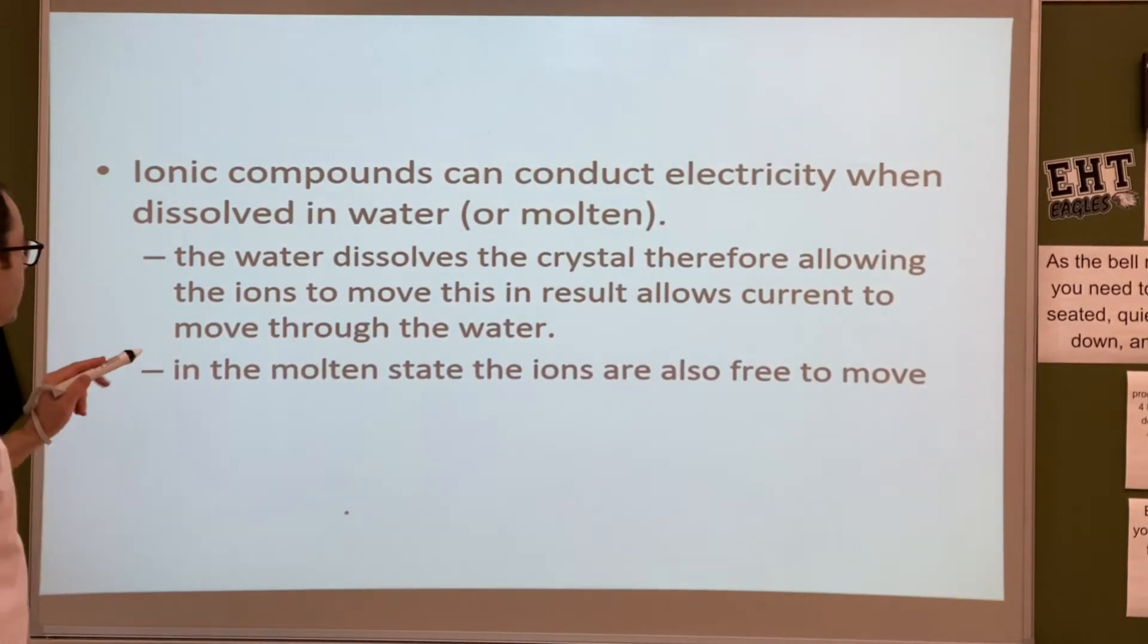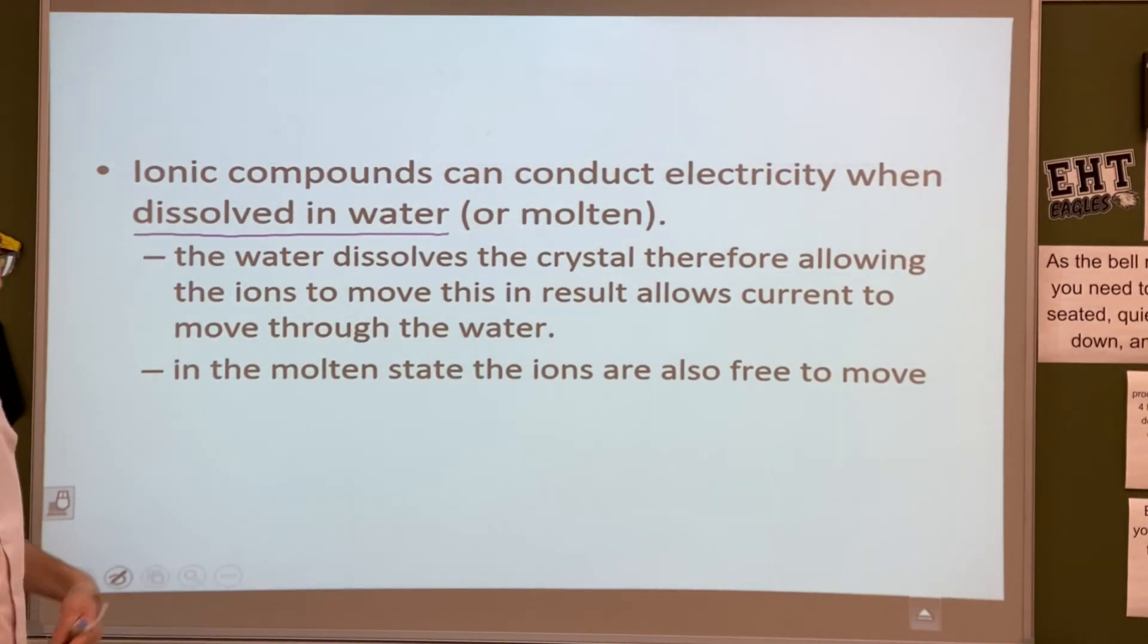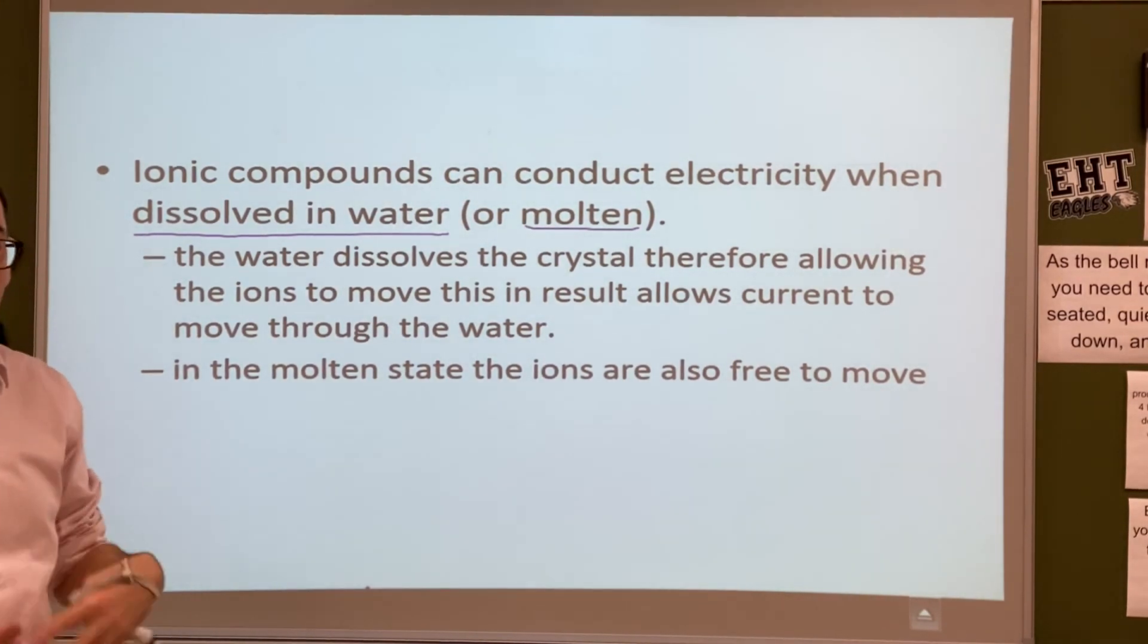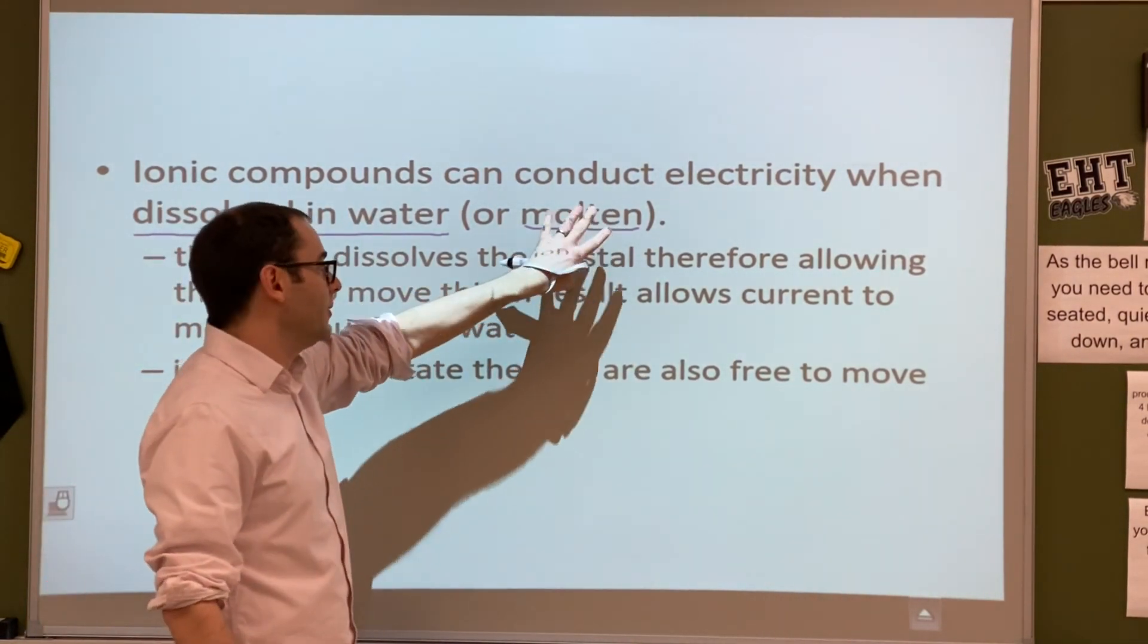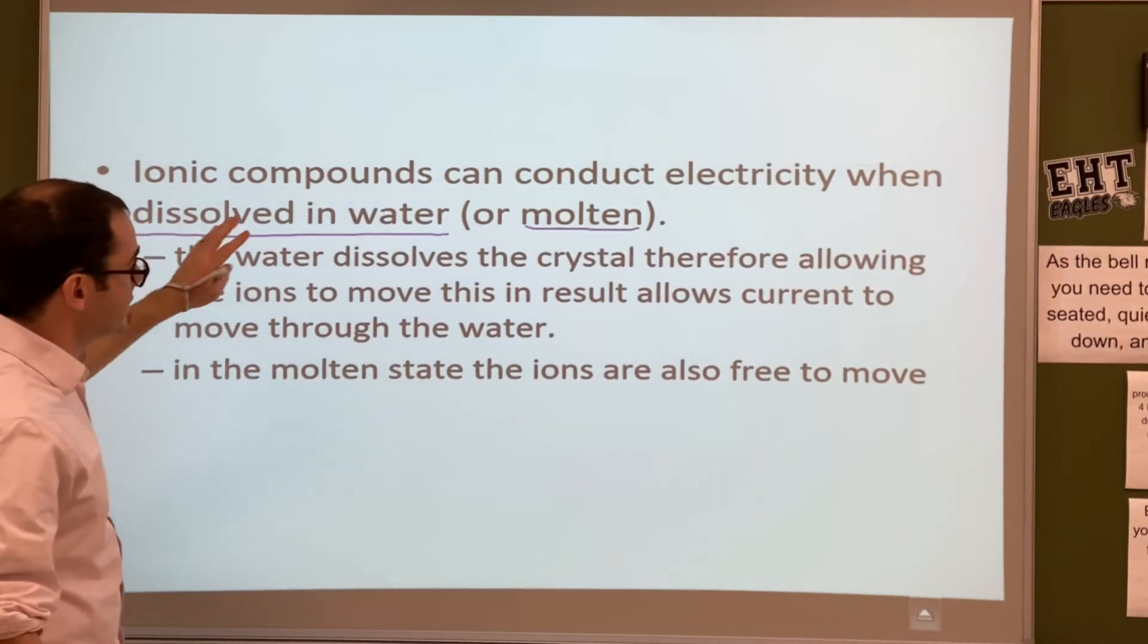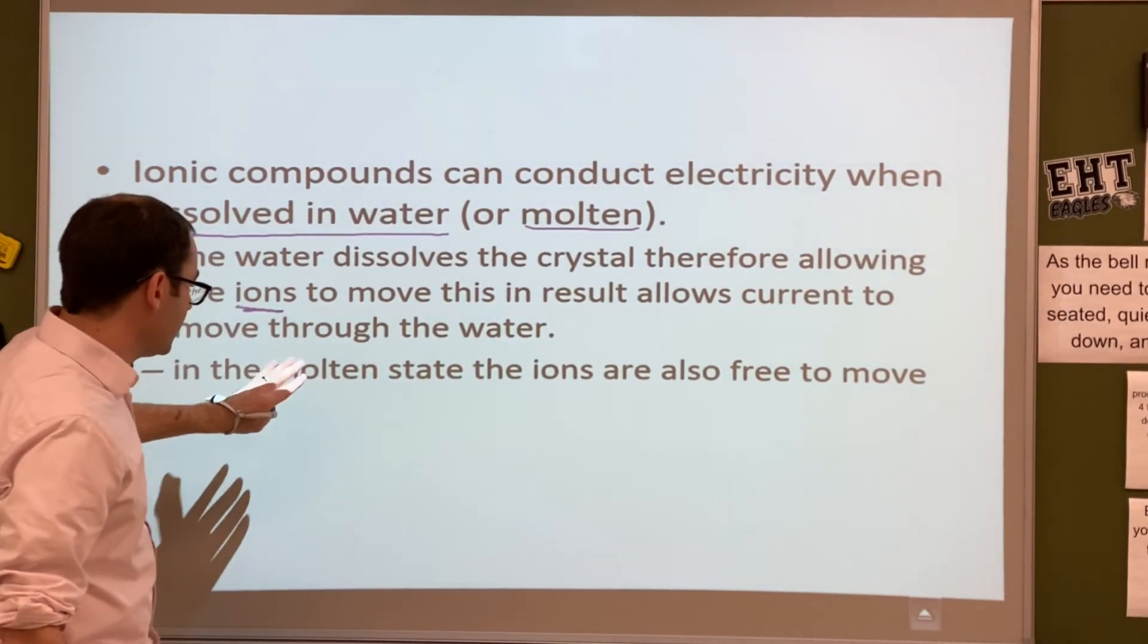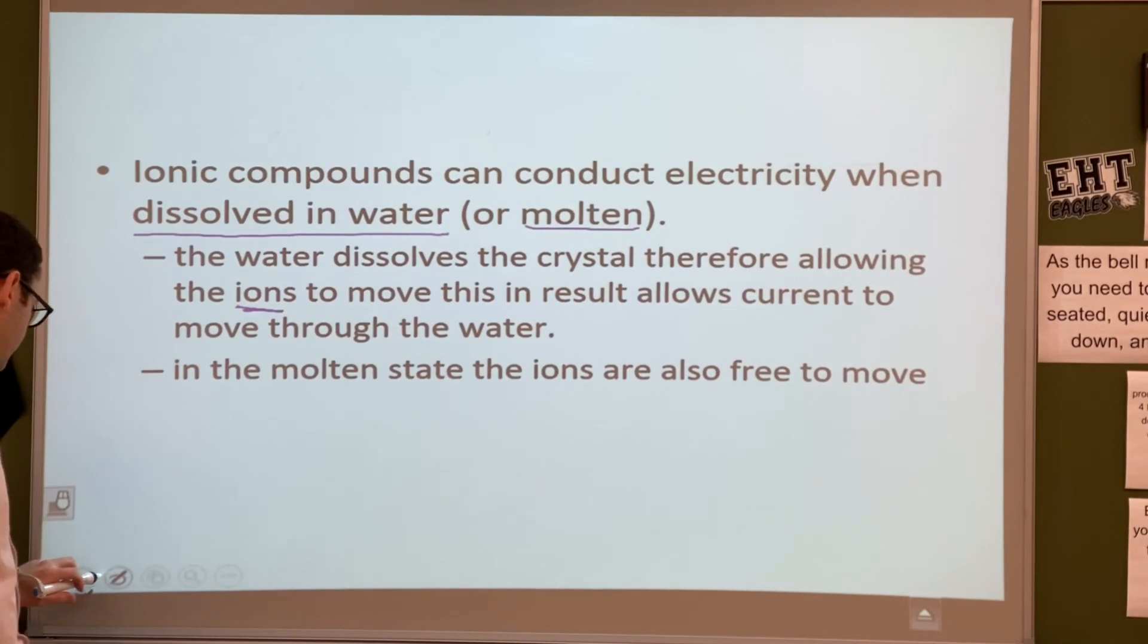Okay, ionic compounds can conduct electricity two ways. One, if you dissolve them in water, which we're going to do a lab on this next week, and go over conductivity, or you could melt them down, which is very difficult. That's not adding water, that's actually raising their temperature to 1000 degrees Celsius, or whatever their melting point is. That's very difficult to do. We're not going to do that in lab, because it's kind of like, you know, lava, that kind of a thing. That's kind of the molten, if you think of it that way. We'll dissolve it in water, because we can do that very easily. The water dissolves the crystal, therefore allowing those ions to move, this result allows the current to flow through the water, because the current electricity needs those ions to be able to move through there. The molten state does basically the same thing. The ions are free to move. So, you could think of that as, it would be able to conduct electricity as well. But again, we're not doing that in lab.